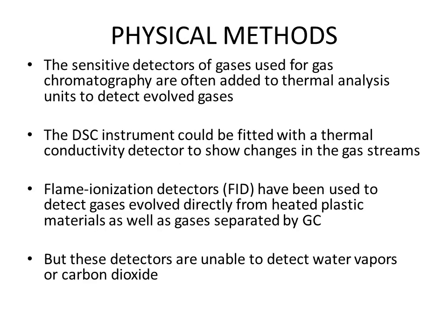For physical methods, various sensitive detectors used in gas chromatography are often added to thermal analysis units to detect evolved gases. For example, a DSC instrument could be fitted with a thermal conductivity detector (TCD) to show changes in the gas stream. Flame ionization detectors (FID) have been used to detect gases evolved directly from heated plastic materials as well as gases separated by gas chromatography. However, a problem with these detectors is that they are unable to detect water vapors or carbon dioxide, which are frequently evolved materials in thermal methods of analysis.